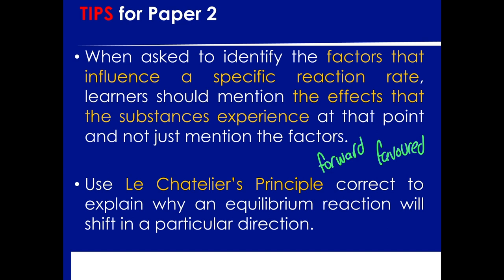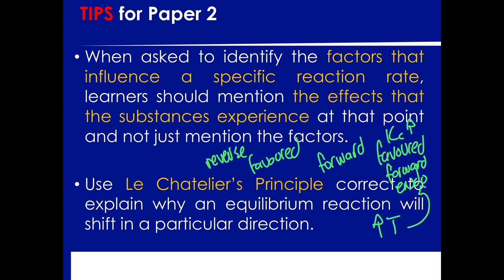For example: the forward reaction was favoured because the Kc value increased, the forward reaction is endothermic, so the temperature was increased — because increasing temperature favours the endothermic reaction. Read over your answers to make sure your logic is clear and concise. Concise means don't use a hundred words when five will do — but your reasoning must be clear, logical, and understandable to the marker.